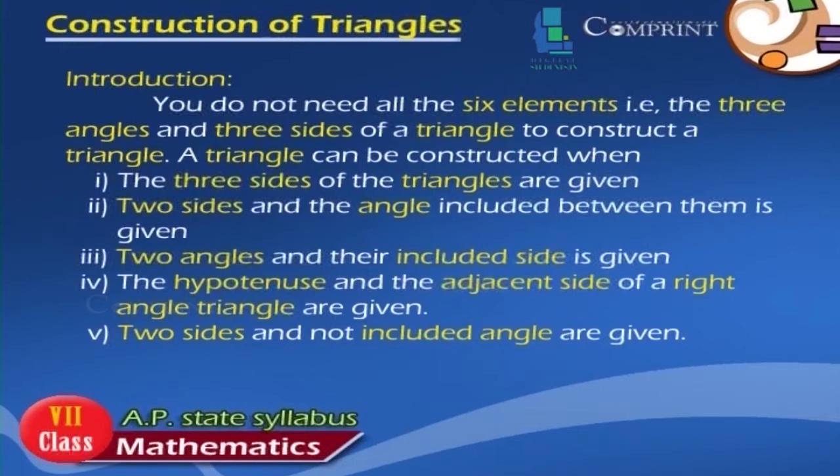A triangle can be constructed when: 1. The 3 sides of the triangle are given. 2. Two sides and the angle included between them is given. 3. Two angles and their included side is given. 4. The hypotenuse and the adjacent side of a right-angled triangle are given. 5. Two sides and the non-included angle are given.